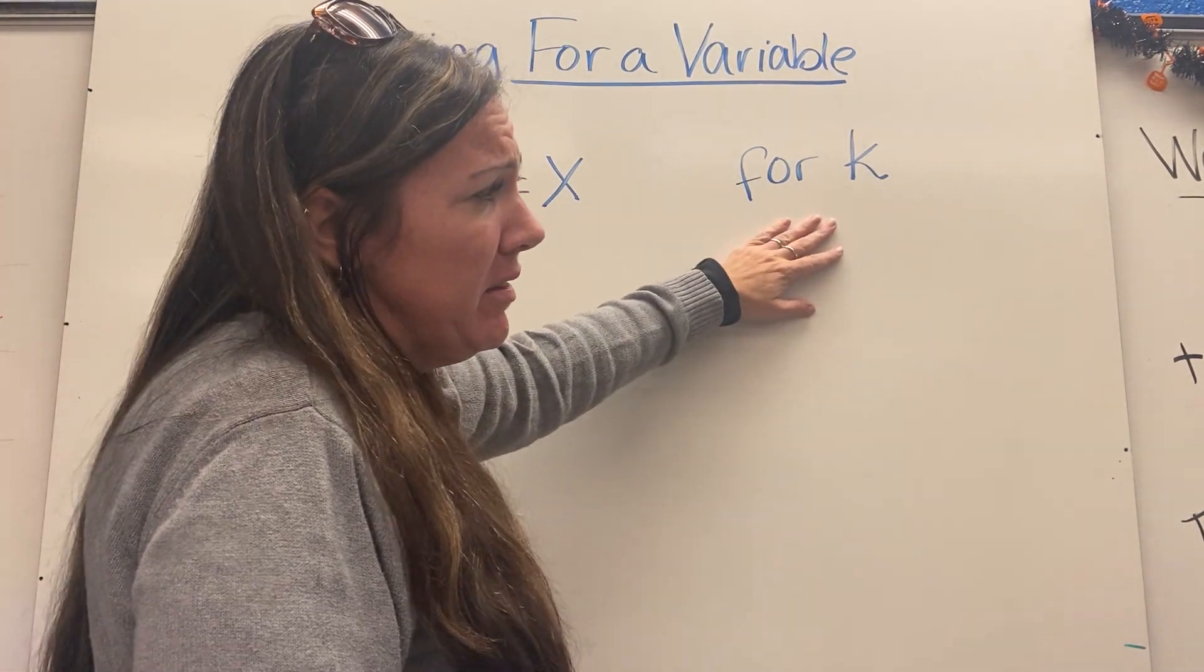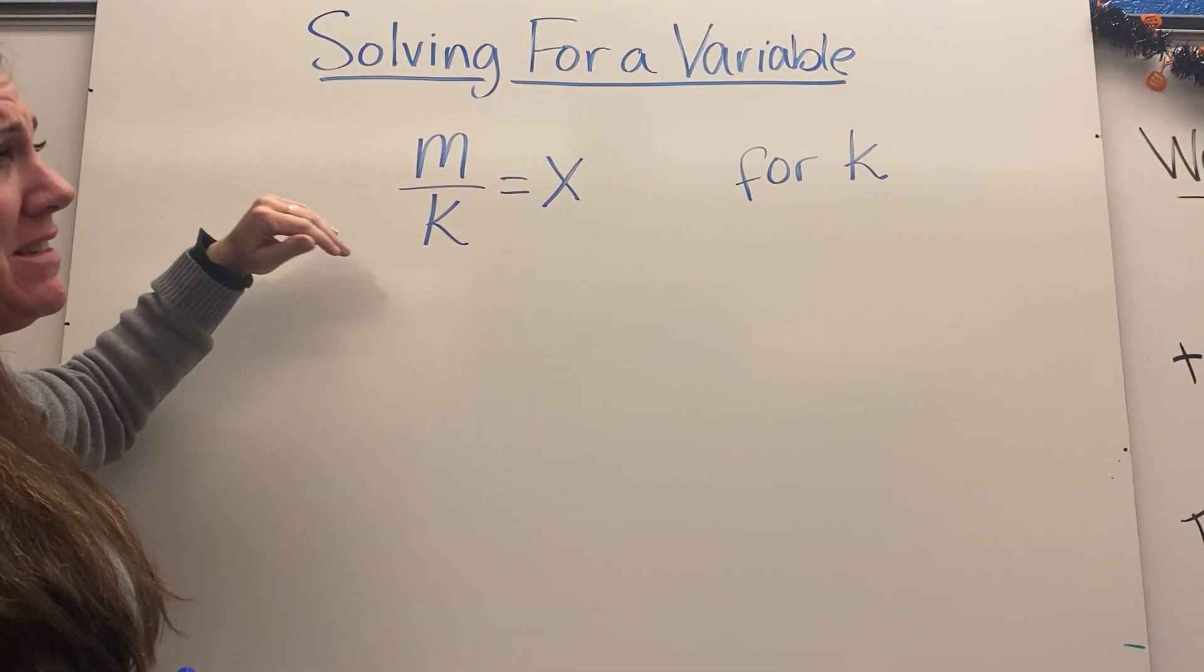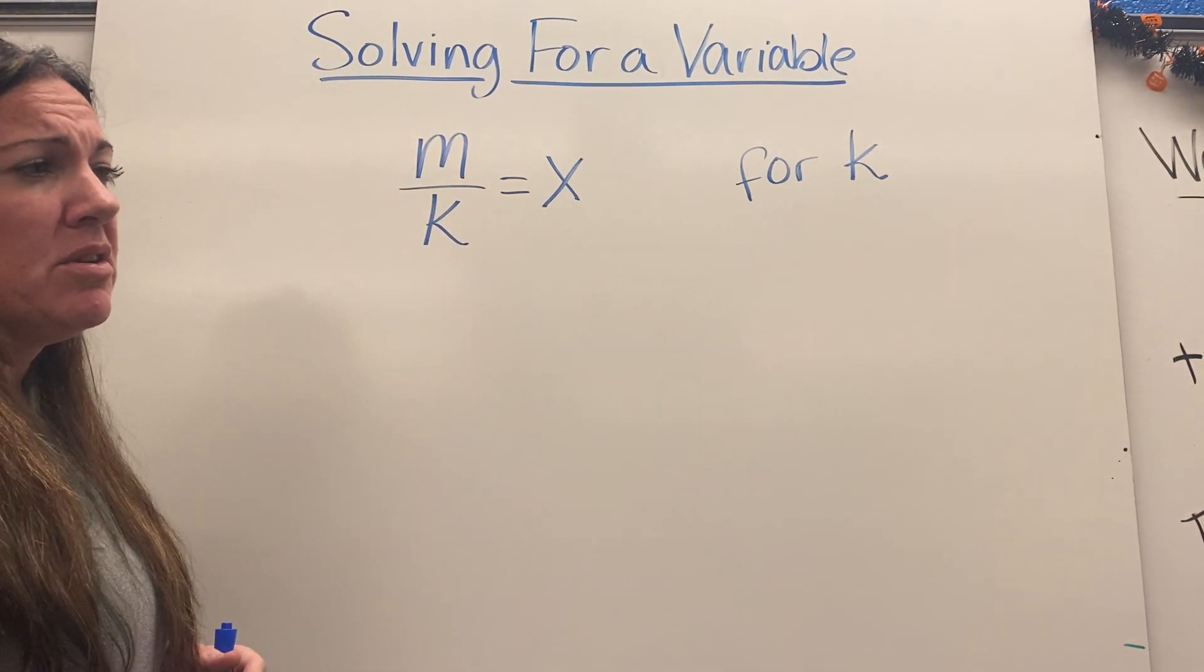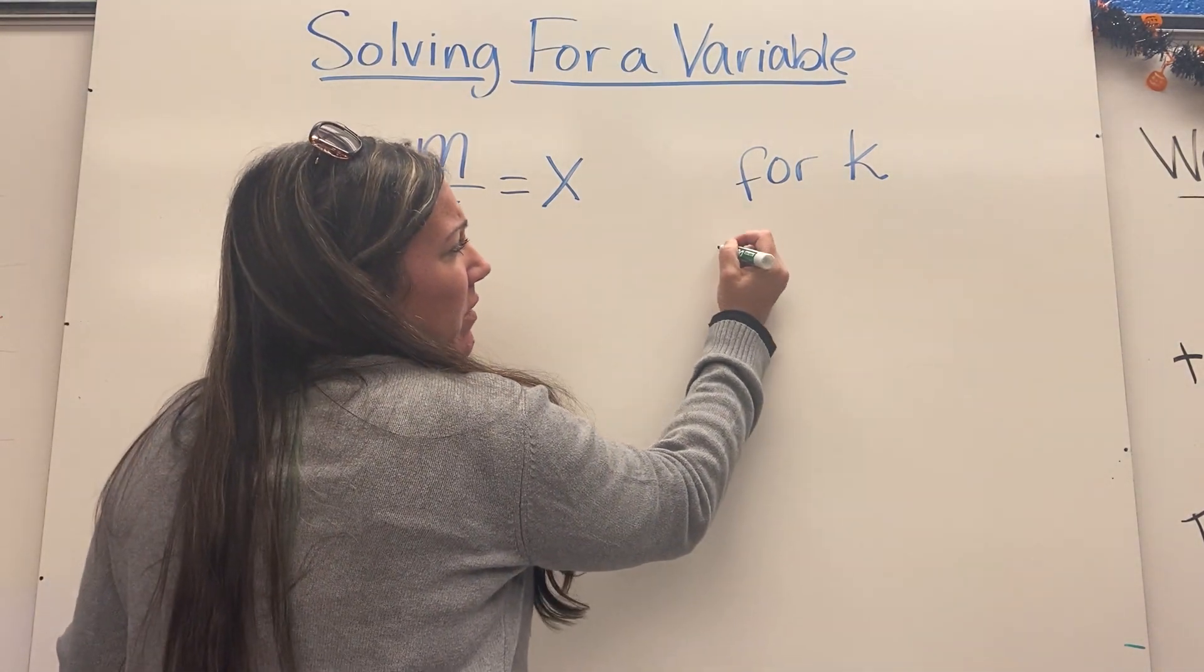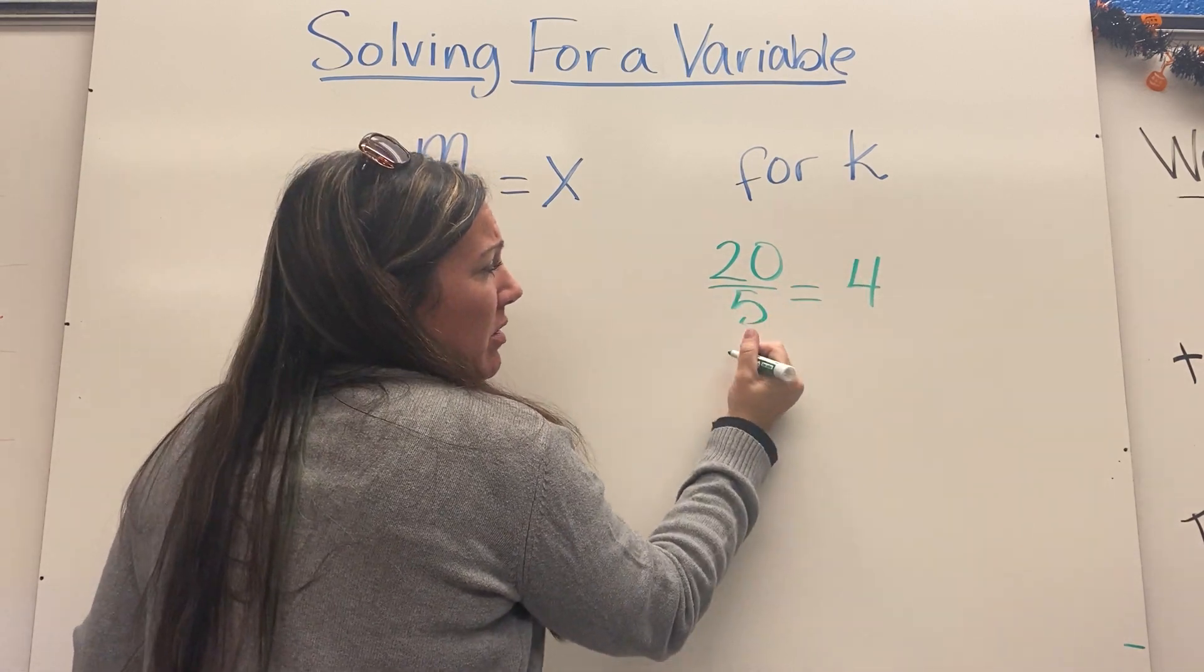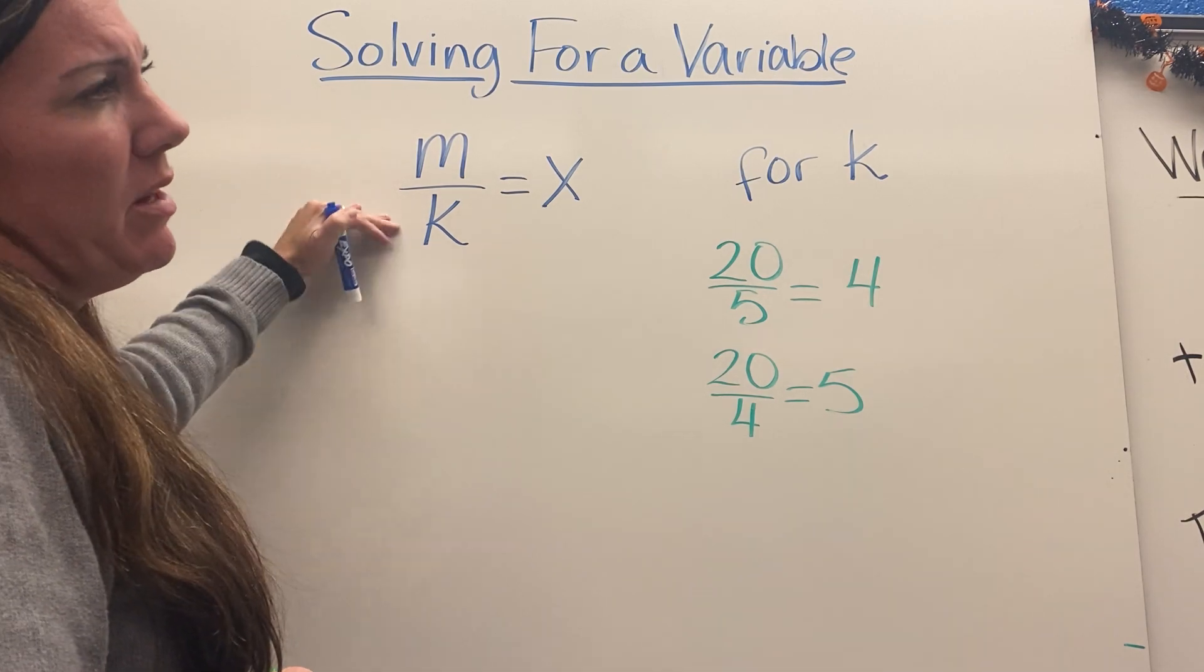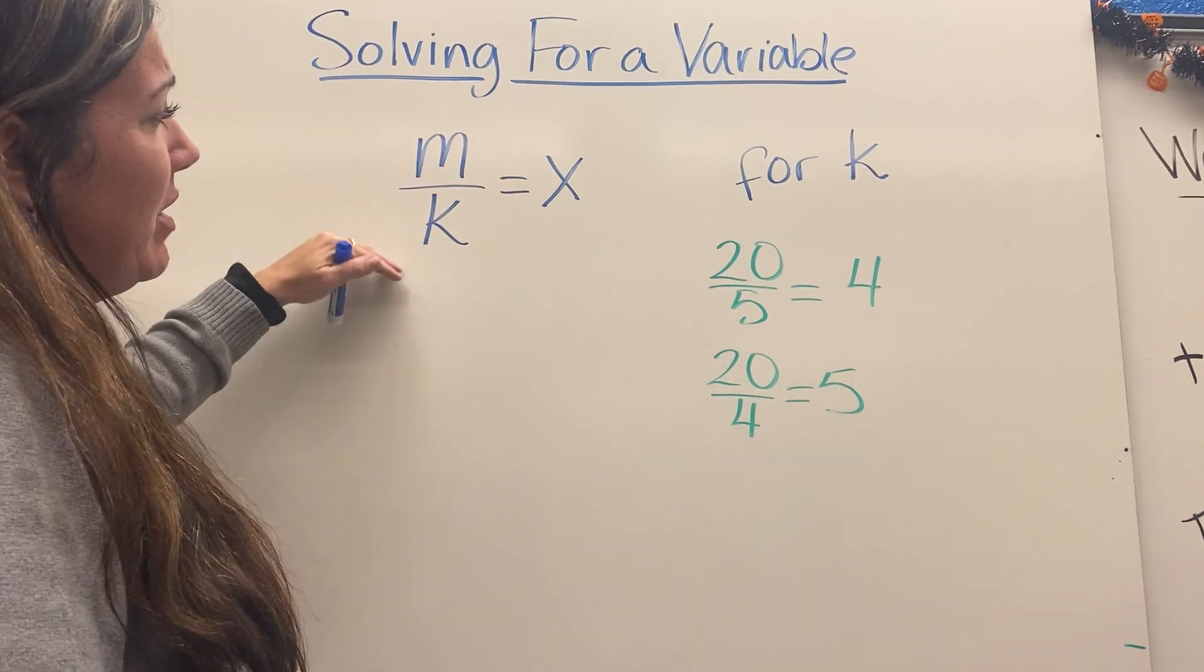At first this one doesn't seem too bad. I'm going to solve for k, and if I look at what's happening to k, m is being divided by k. We approach this a little bit differently. You can think about it in terms of multiplication families. For example, if I have 20 divided by 5 equals 4, these can flip right around so 20 divided by 4 also equals 5. So if you have m divided by k equals x, then m divided by x is going to equal k.